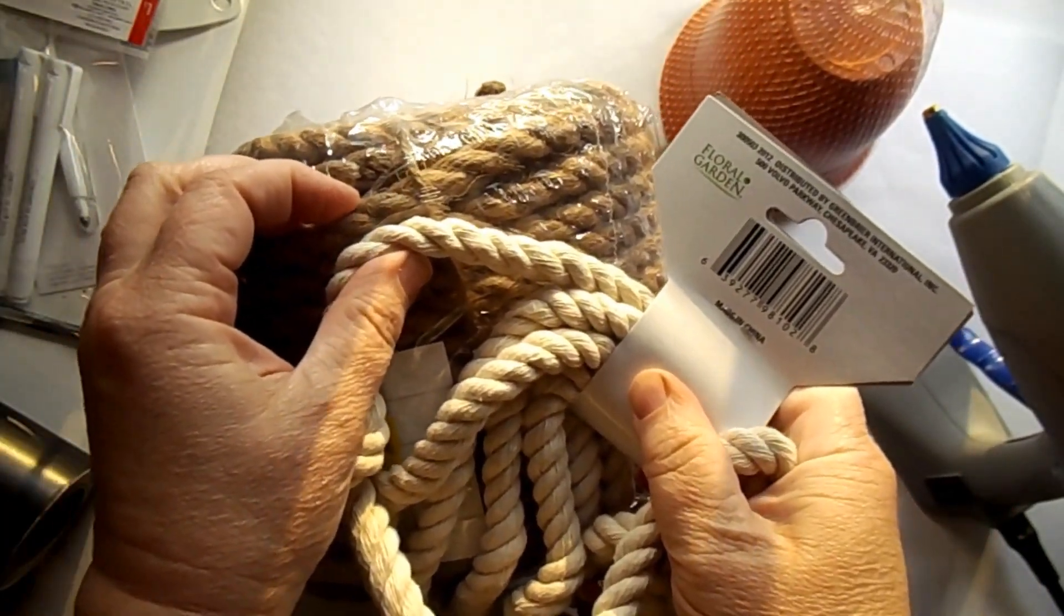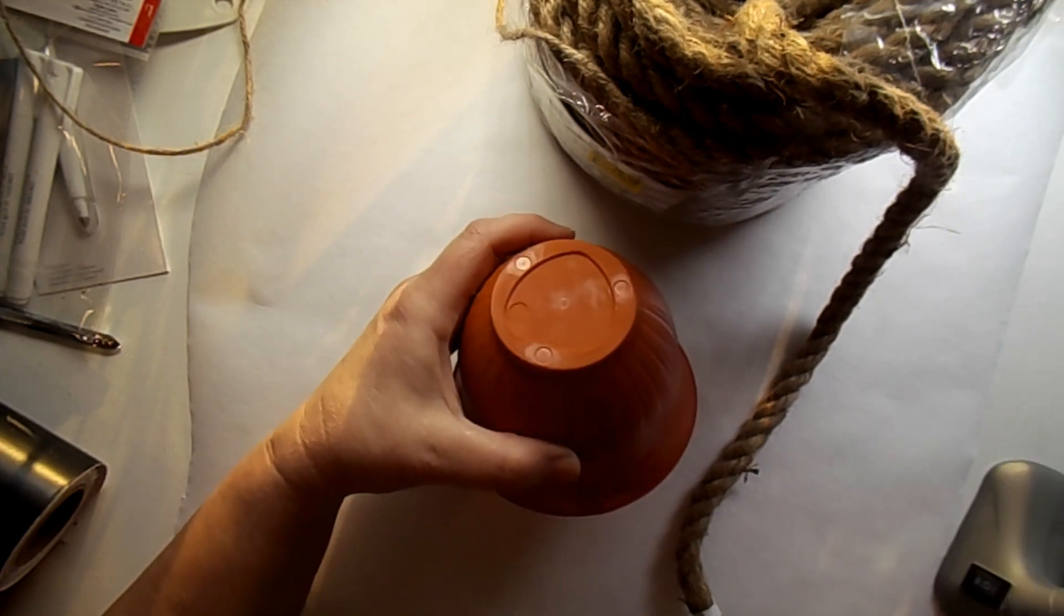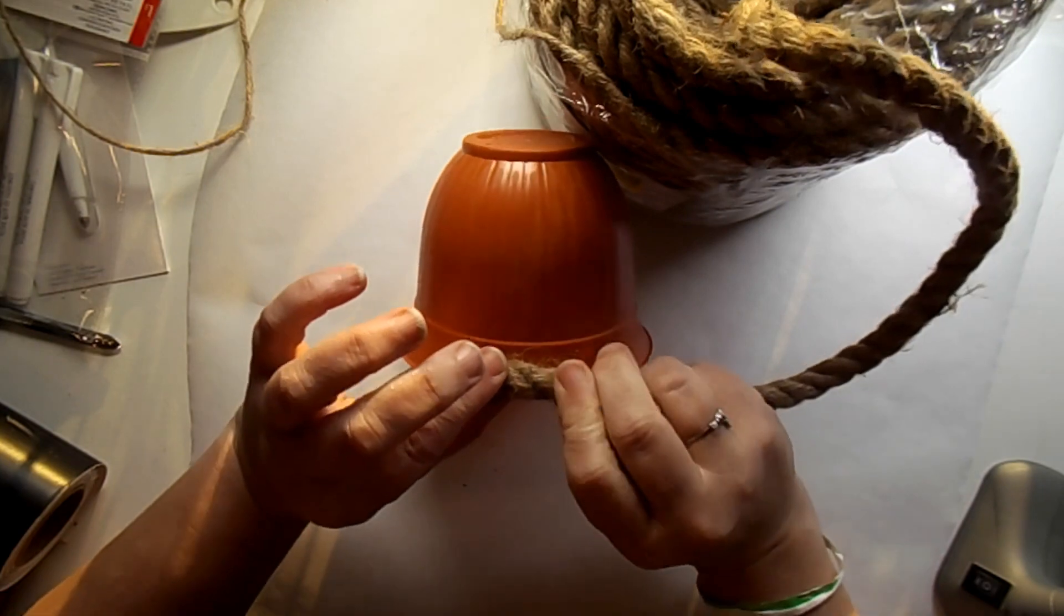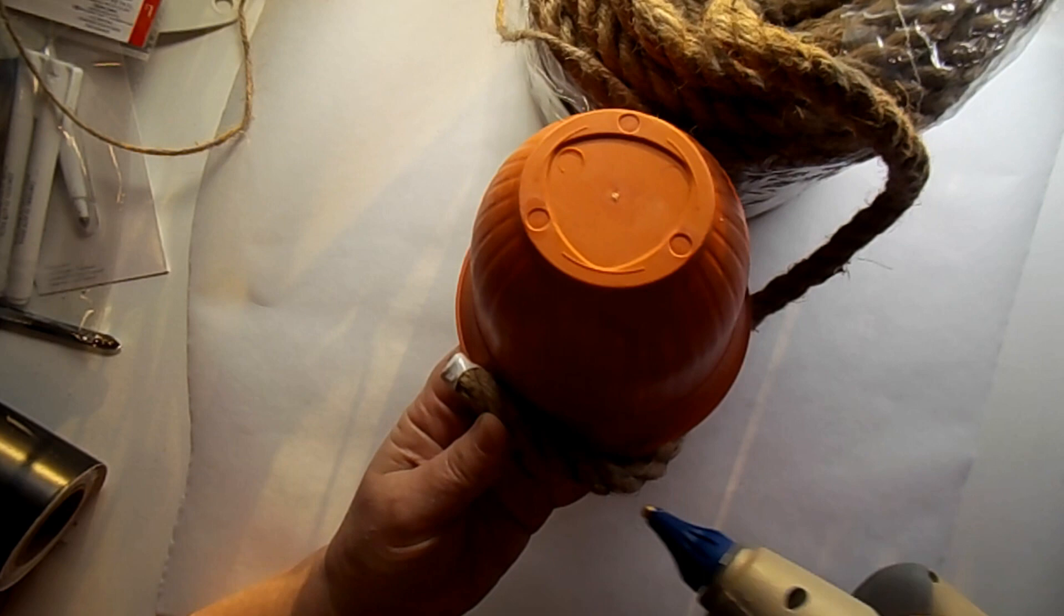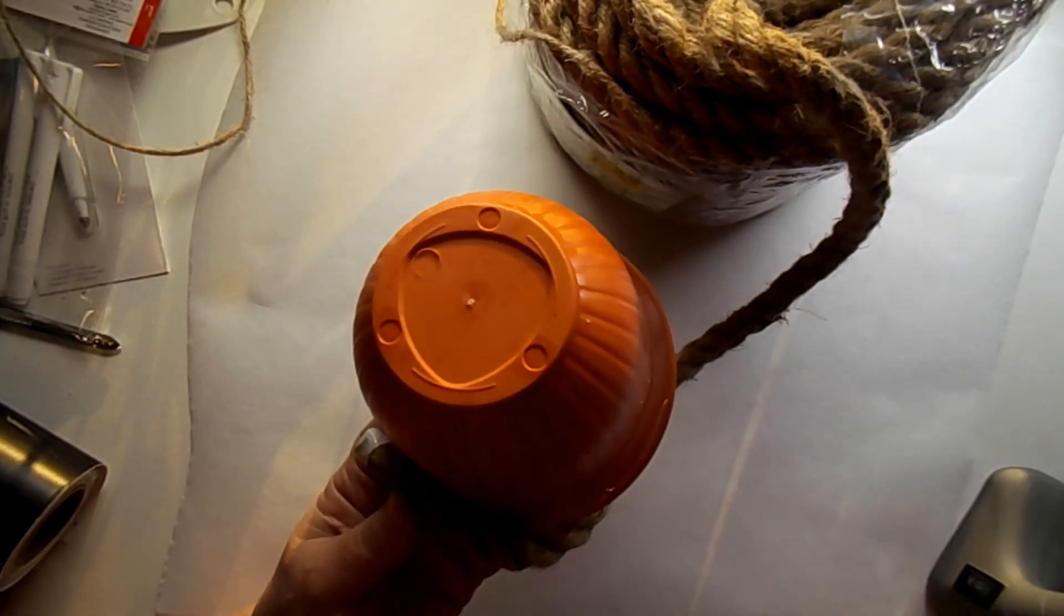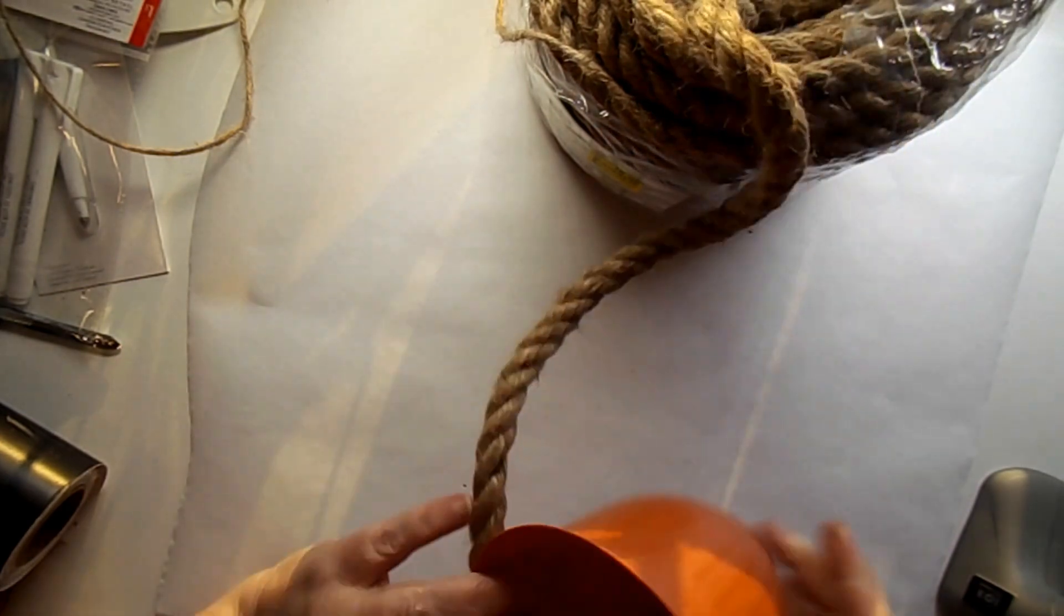This rope is really close to the nautical rope. So what I did was I started with a little bit of hot glue and I'm going to go around in the circle here. I was inspired by Shannon at the Daily DIYer. She had made one like this and I'm like, oh, I got to try that.